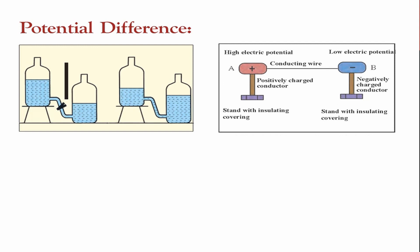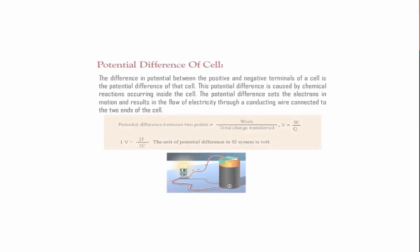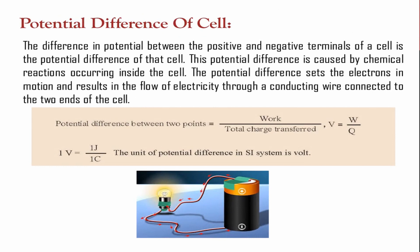Moving to the potential difference of a cell: the cell has a positive terminal and a negative terminal. When you connect a bulb with a conducting wire, charges from the positive terminal flow through the wire and hit the bulb, causing it to glow. The bulb glows because it receives electrical energy. The charge completes the circuit by flowing from higher to lower potential, and the bulb takes the energy in between.